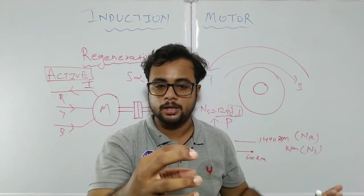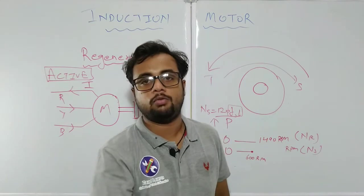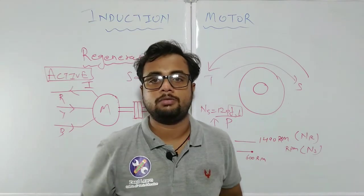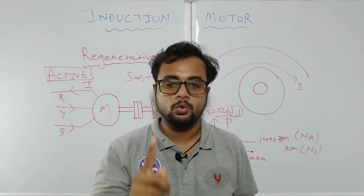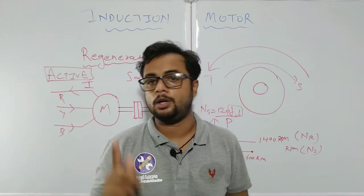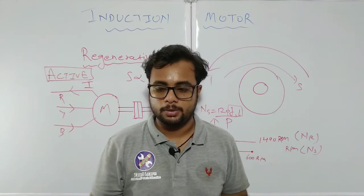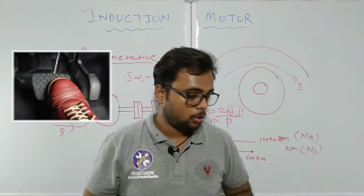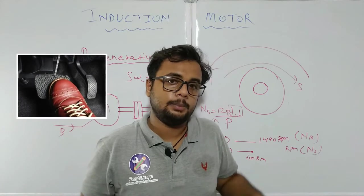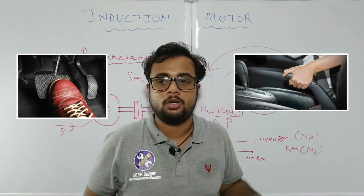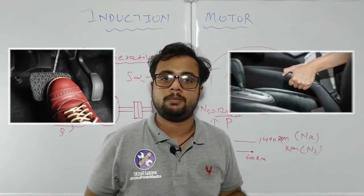If you have to stop the motor at 0 RPM, you must use mechanical braking in combination with electrical braking. Just like a car has both a brake pedal and a hand brake — the hand brake is used to keep the car stationary at a particular position.